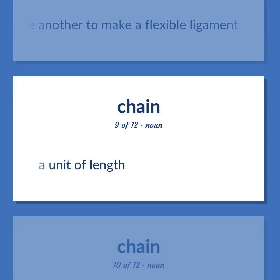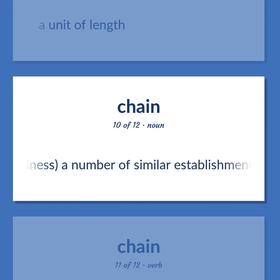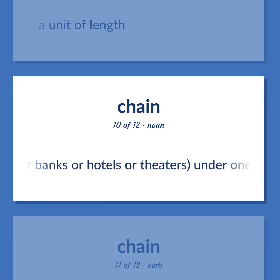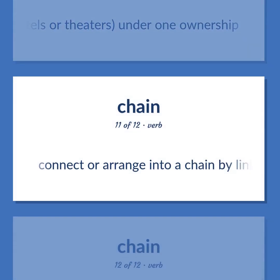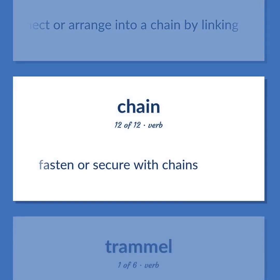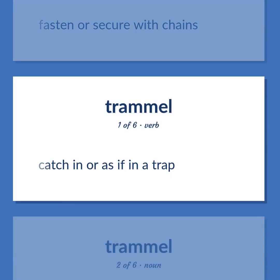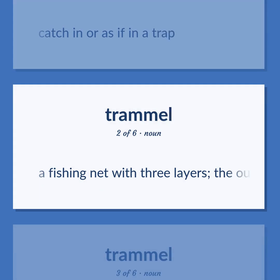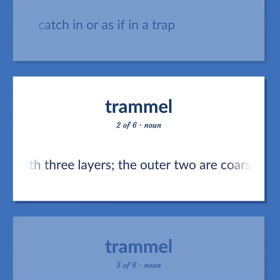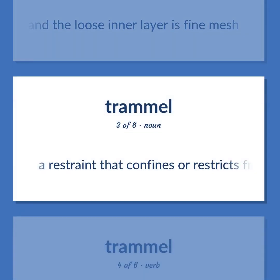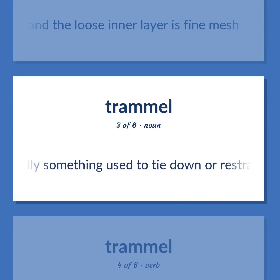Chain: A unit of length. Business — a number of similar establishments, stores or restaurants or banks or hotels or theaters, under one ownership. Connect or arrange into a chain by linking. Fasten or secure with chains. Trammel: Catch in or as if in a trap. A fishing net with three layers — the outer two are coarse mesh and the loose inner layer is fine mesh. A restraint that confines or restricts freedom, especially something used to tie down or restrain a prisoner.